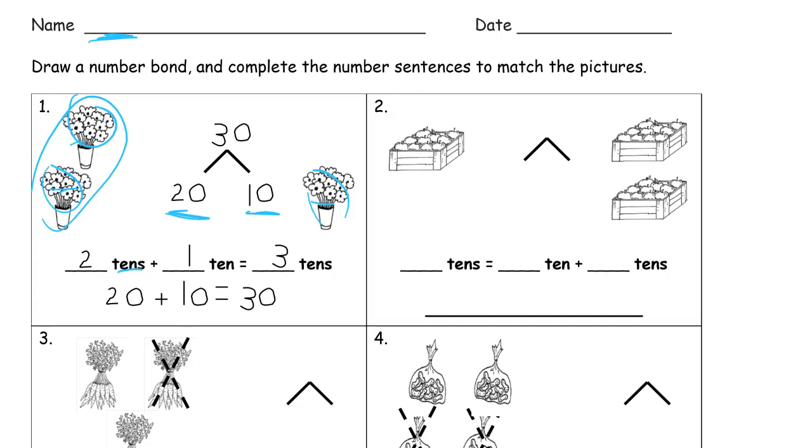This is written in unit form here. We're counting tens. One ten, two tens. Two tens plus one ten equals three tens. And then writing the number sentence, this is the number sentence, 20 plus 10 equals 30.